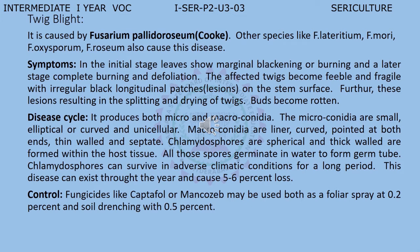Coming to the symptoms of twig blight: in the initial stage, leaves show marginal blackening or burning, and at a later stage, complete burning and defoliation. The affected twigs become feeble and fragile with irregular black longitudinal patches or lesions on the stem surface. Further, these lesions result in the splitting and drying of the twigs. Buds also become rotten.